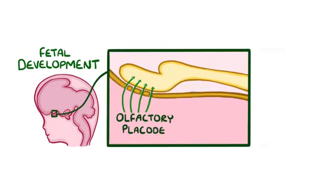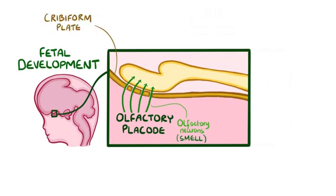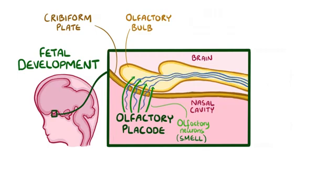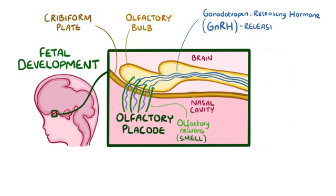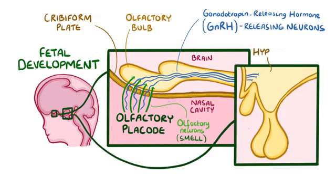Two groups of neurons emerge from that region. The first group contains olfactory neurons that eventually help with sensing smells. These neurons migrate from the olfactory placode and get embedded in the cribriform plate, which is a bone plate that separates the nasal cavity from the brain, forming the olfactory bulb. The second group contains neurons that release gonadotropin-releasing hormone. These neurons migrate through the cribriform plate and settle in the hypothalamus.